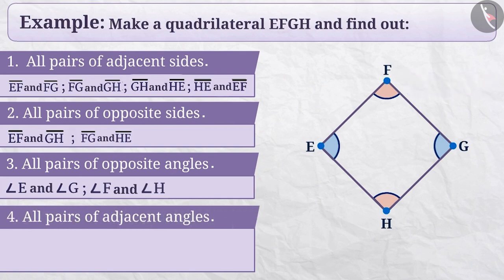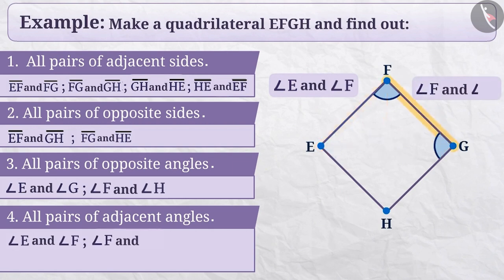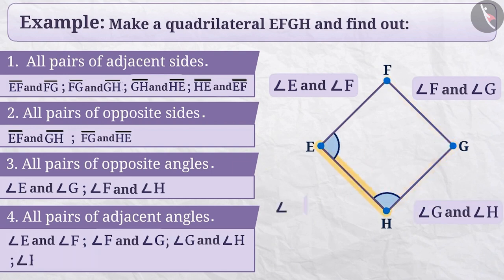If we want to find all pairs of adjacent angles, then it is important to know that if any of the 2 angles of a quadrilateral have a common side, then such angles are called adjacent angles, such as angle E and angle F, angle F and angle G, angle G and angle H or angle H and angle E.